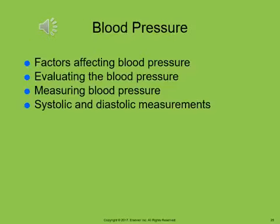Blood pressure: the systolic pressure is the highest pressure level that occurs when the heart is contracting and the first pulse beat is heard. The diastolic pressure is the lowest pressure level when the heart is relaxed and the last sound is heard. The difference between systolic and diastolic blood pressure is the pulse pressure. The blood pressure is recorded as a fraction, with the systolic reading — the numerator — on top, and the diastolic reading — the denominator — on the bottom.